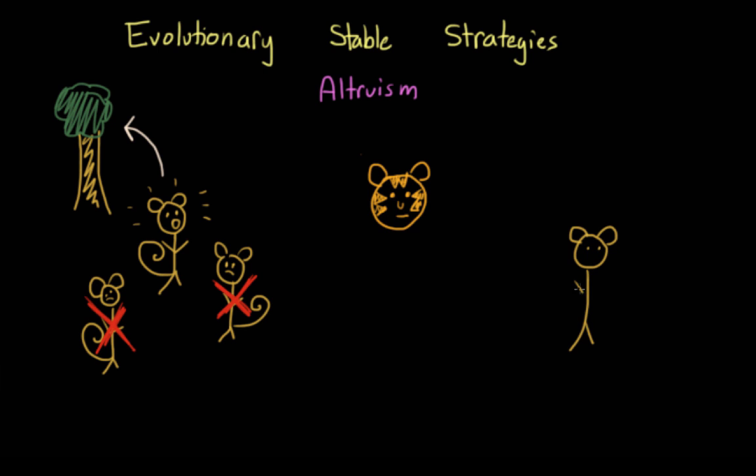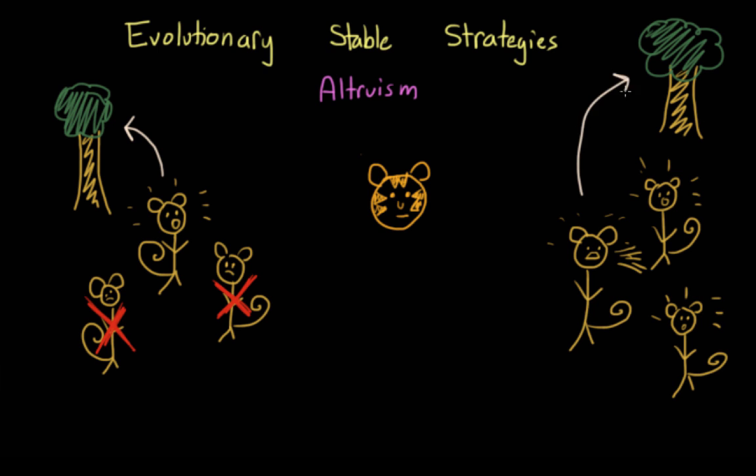But what if they adopted another strategy, one that involves giving an alarm call whenever a predator was spotted? The monkey that would make this call is doing this at his or her own expense because it could draw the predator to them. So initially, you might think that this strategy would fail. But what happens when a monkey makes a call? It means that all of the other monkeys within that group survive.